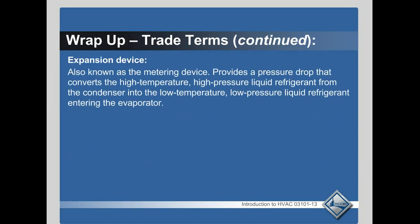The expansion device — this is the other dividing point which divides the high side of the system from the low side of the system. It provides a pressure drop, and whenever you have a pressure drop in refrigerant it lowers the temperature as well. So it takes that high pressure, high temperature liquid and drops the pressure down into the evaporator so that we can absorb the heat from the structure.